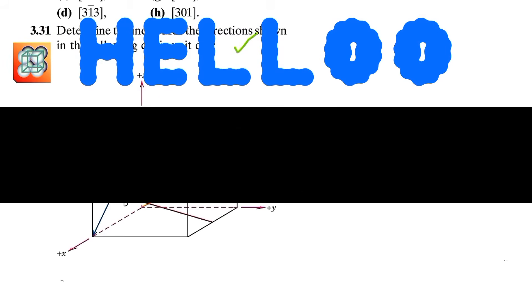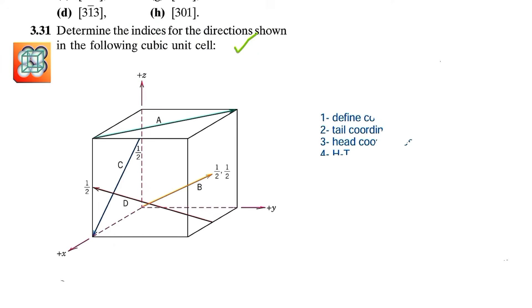Hello everyone, I hope you're doing well. In this video we'll be finding out the indices for the directions in the cubic unit cell. In the previous video we calculated the Miller indices for direction A, and in this video I'll be calculating the Miller indices for direction B. The method is super easy. Let's quickly get started, but first we should know the steps we're going to follow.